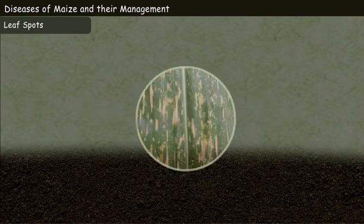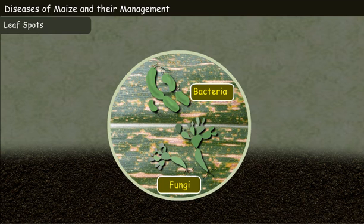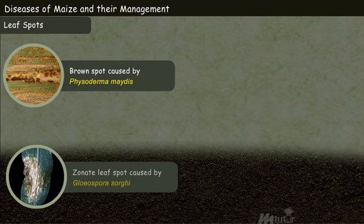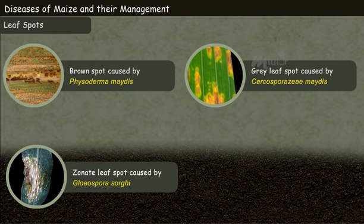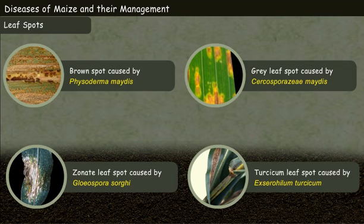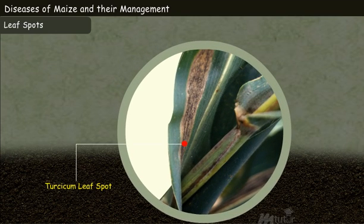Leaf spots of maize are caused by various bacteria and fungi. The commonly occurring leaf spots are brown spot caused by Physoderma maydis, zonate leaf spot caused by Gloeocercospora sorghi, grey leaf spot caused by Cercospora zeae-maydis, and Turcicum leaf spot caused by Exserohilum turcicum. We shall learn about Turcicum leaf spot in maize.